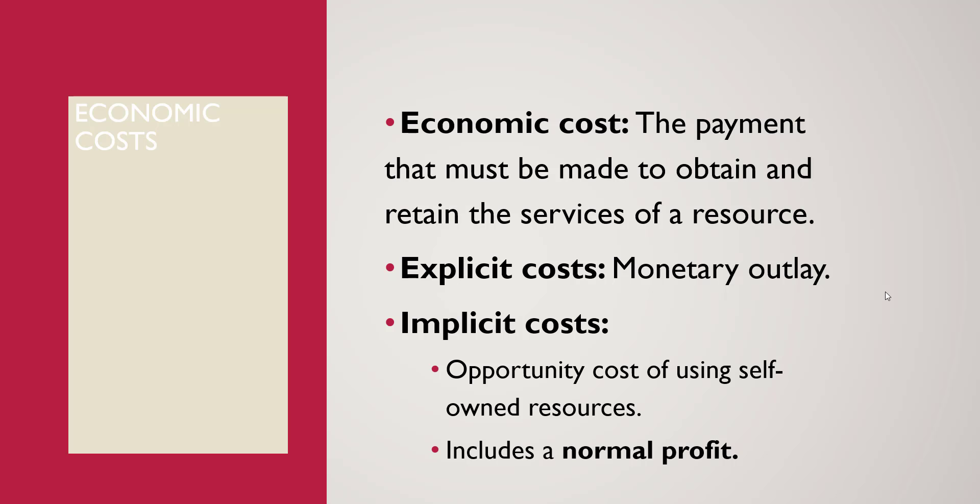These self-owned resources that you're not necessarily compensated for are actually costs of doing business. For example: let's say you have a store that you own, and you decide to open a cell phone store using that storefront. You might say that's awesome — you don't pay any rent. But an economist will say you could have gotten rent for it. You gave up that rent when you decided to use the resource for yourself. This is an implicit cost of running that cell phone store.